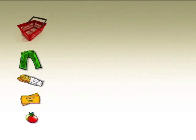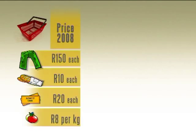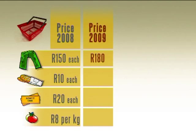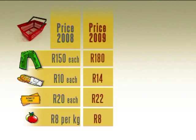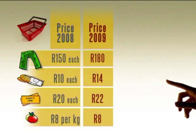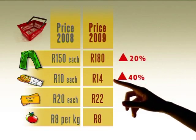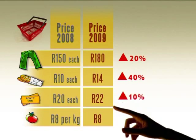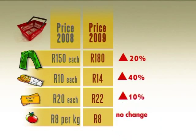The first column lists all the goods in the basket: some trousers, some bread, movie tickets, and some apples. Column two lists the price of these goods as they were in 2008, and column three, the price as it will be in 2009. The price of trousers increased by 20%, the price of bread went up 40%, the price of a movie ticket by 10%, and there was no change at all in the price of apples.